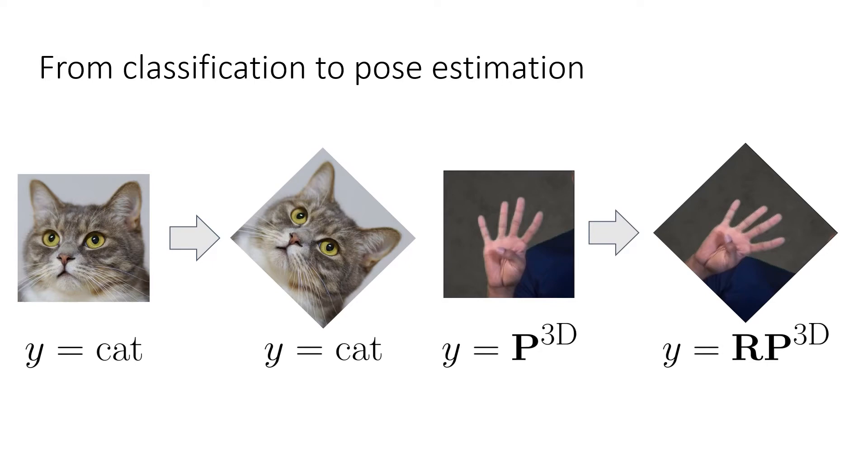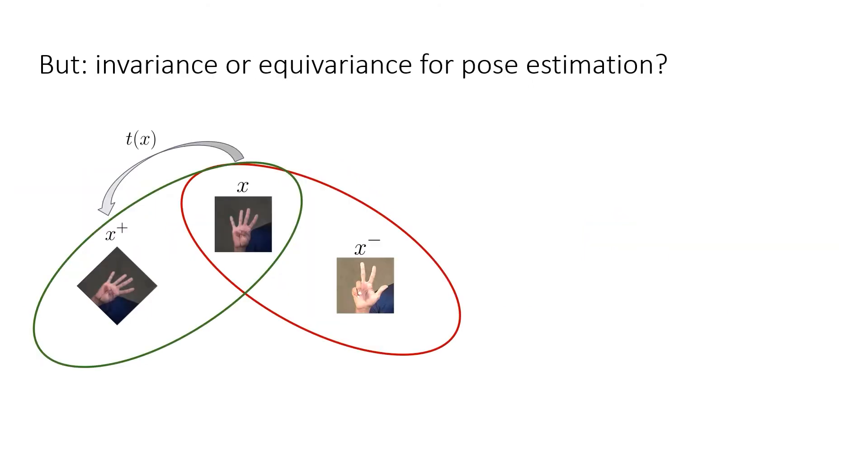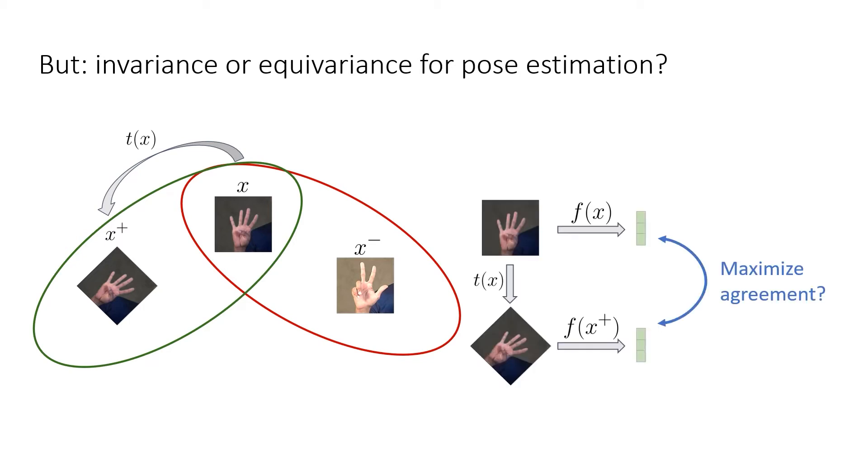On the other hand, in pose estimation, we require equivariance under affine transformations. So in our previous example of rotation, if you rotate the hand, the pose changes accordingly. Let us return to the contrastive framework, this time considering the task of hand pose estimation. As before, we generate positive and negative image pairs. But to maximize agreement under all transformations, SimCLR induces invariance. As has motivated before, we desire for pose estimation to be equivariant under affine transformations.